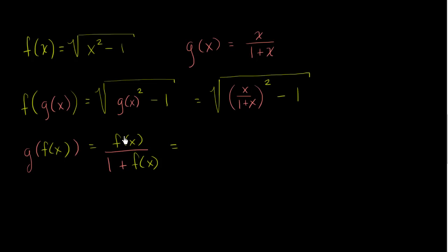And what's that equal to? Well, f of x is equal to the square root of x squared minus 1. So it's going to be that over 1 plus the square root of x squared minus 1.